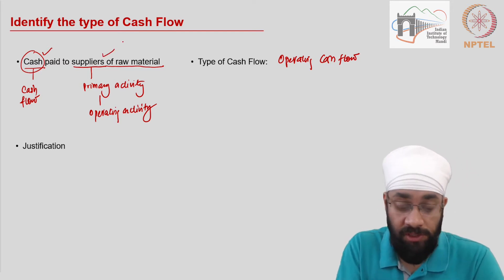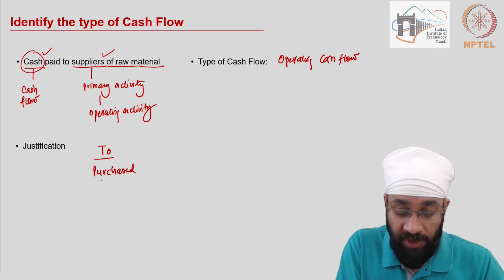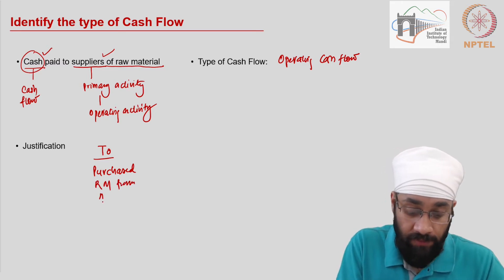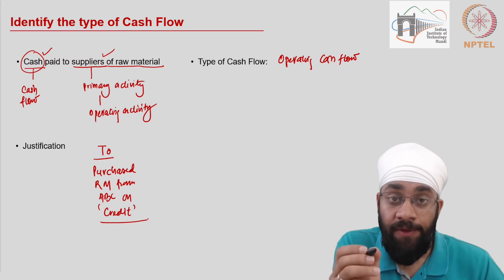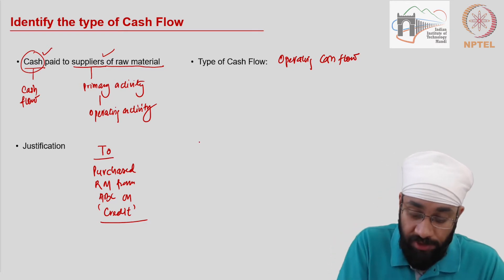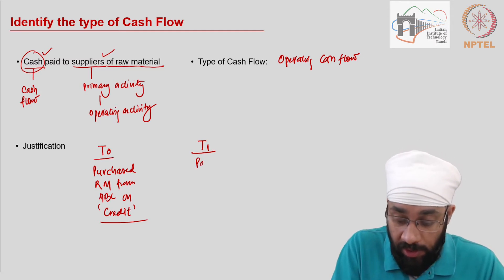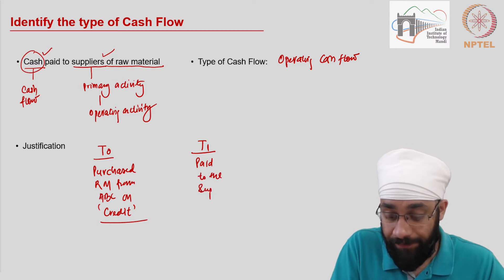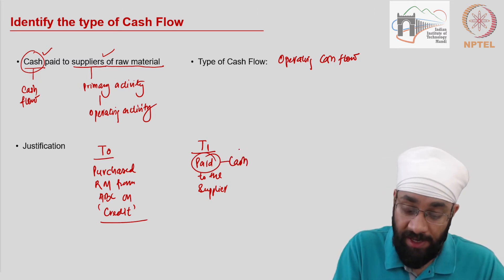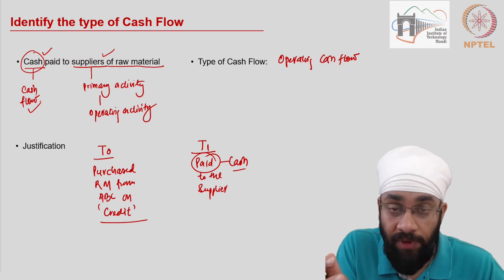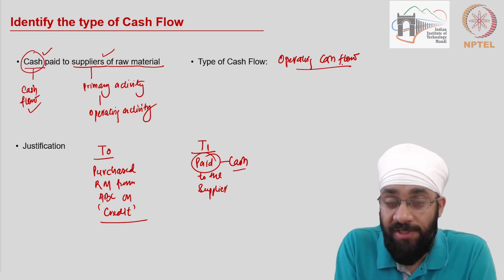Note that paying the suppliers means that at some earlier point — say t0 — you would have purchased raw material on credit. But that is not the transaction on the screen. What is written is that at t1, some time later, you are now paying the supplier. Cash is involved, so this qualifies as a cash flow and is clubbed under operating cash flow. If the transaction were a credit purchase, we would not consider it a cash flow.